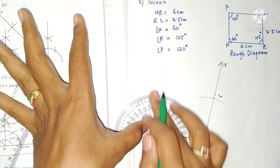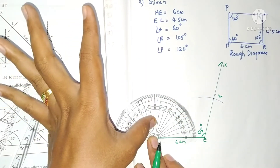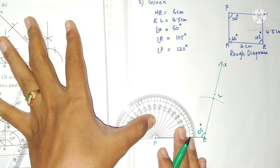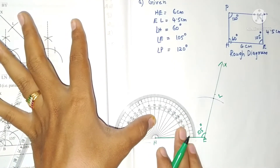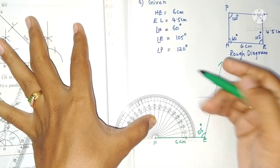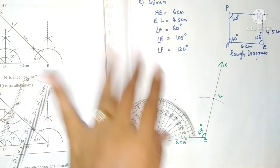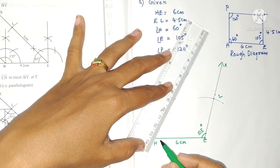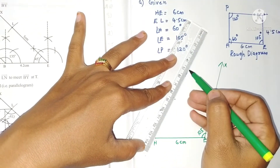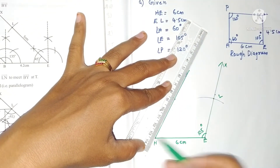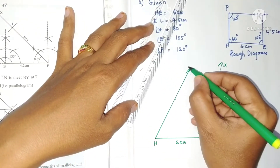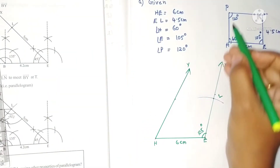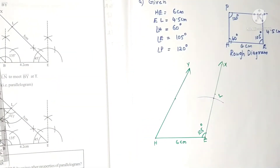Since 60 is less than 90, it lies below the middle. Mark 60 on the down scale and draw another ray from H, let it be ray HY. But we have angle P = 120 degrees, and we cannot locate vertex P directly because there is no intersection of any two rays.